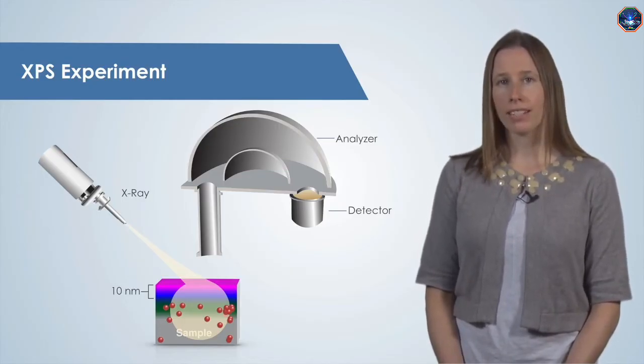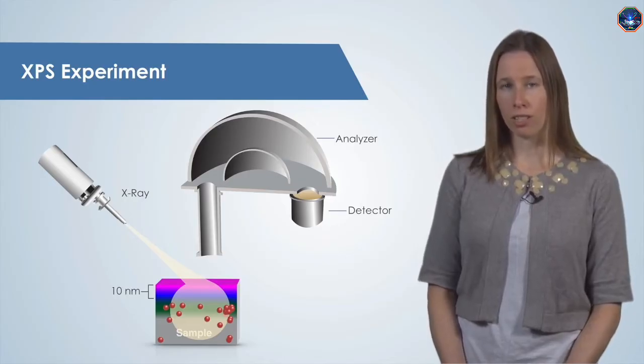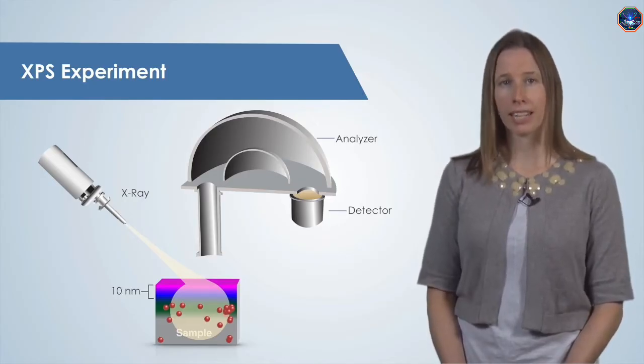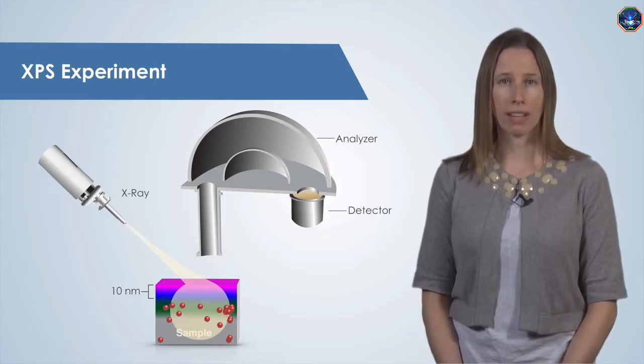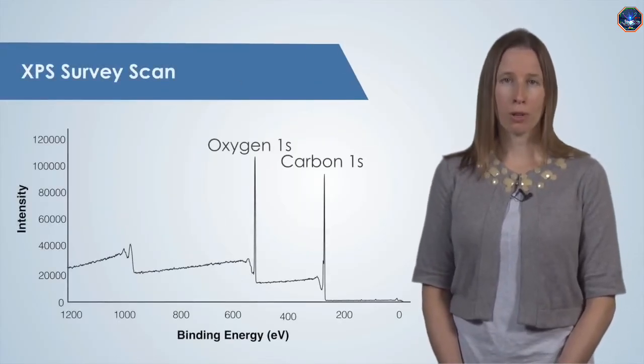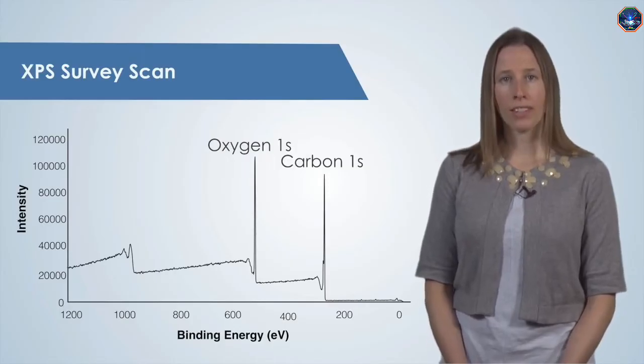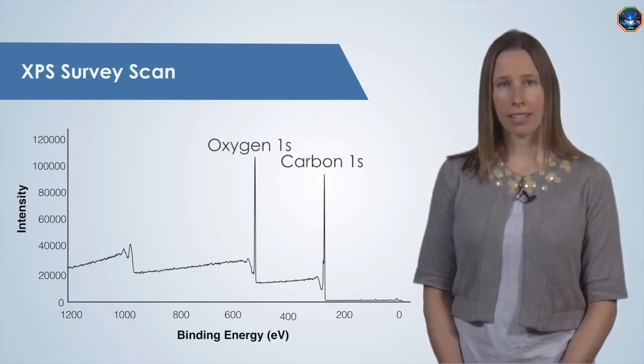If we wanted to analyze an even thinner portion of the surface, we could tilt the sample in a technique called angle-resolved XPS. XPS gives us a spectrum, like the one shown here.